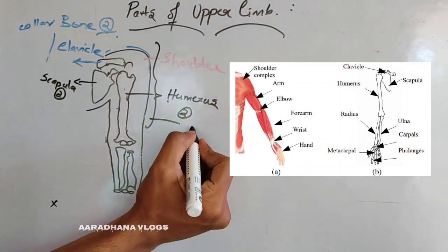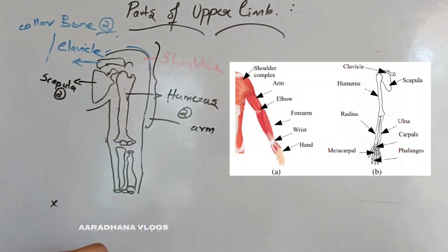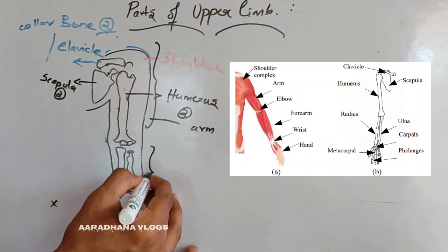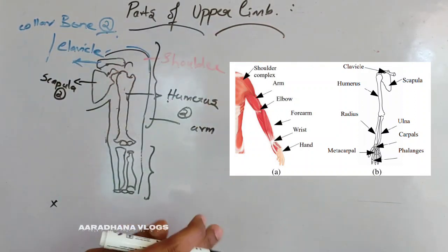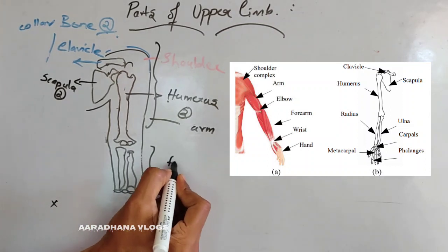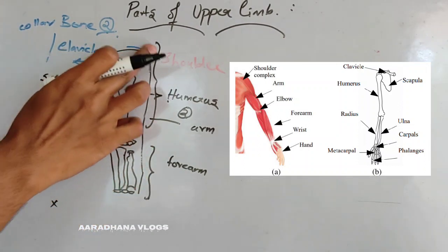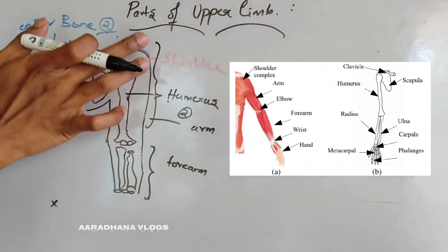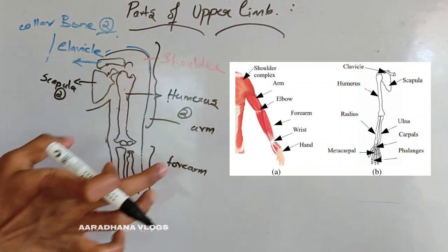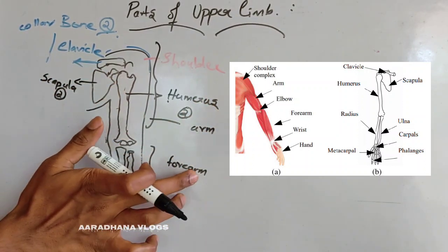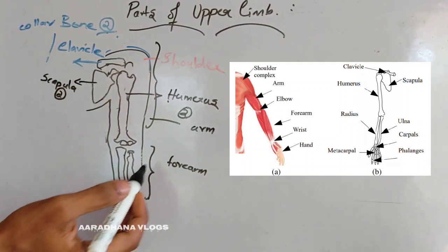From the elbow joint to the wrist joint, this region is known as the forearm region. So to summarize: the shoulder region, then the arm region from shoulder to elbow, and then the forearm region from elbow to wrist. In the arm region, the humerus bone is present.